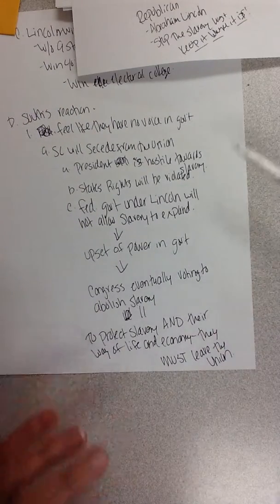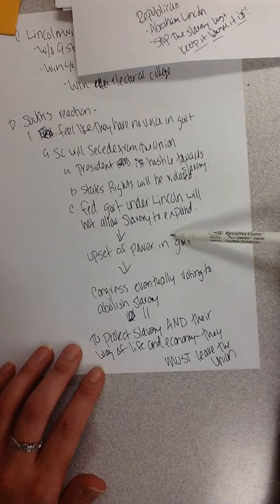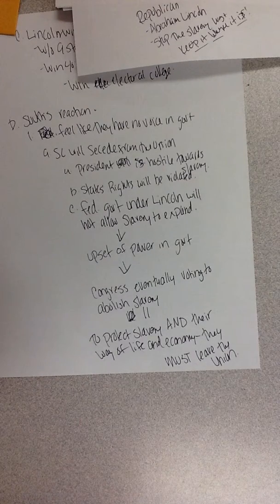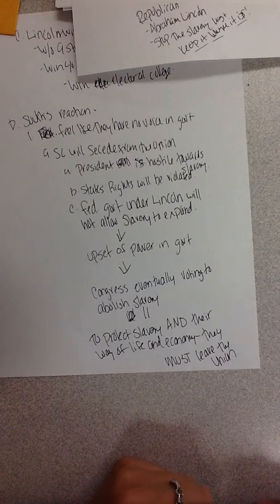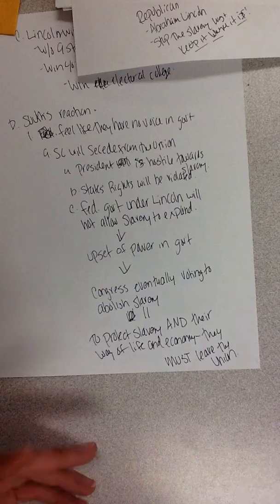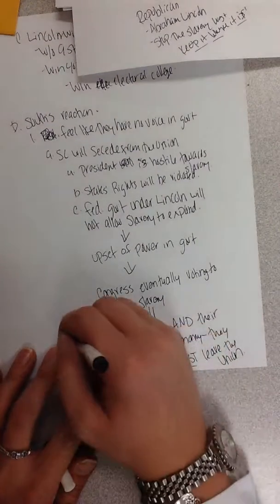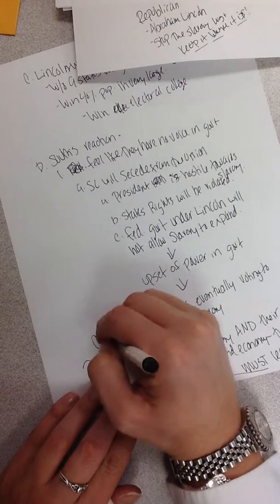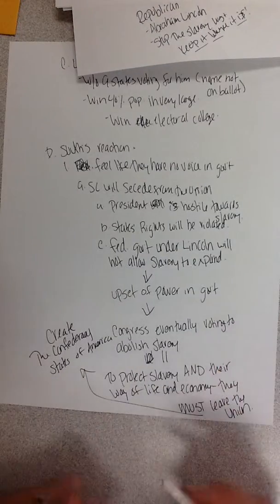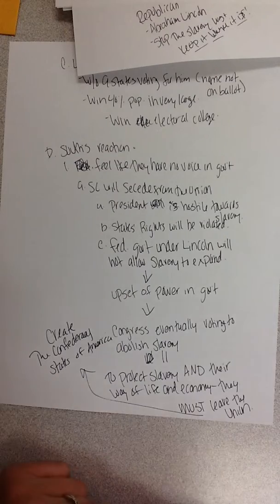It was going to be a snowball effect. As soon as Lincoln became president, he would stop the expansion of slavery, upsetting the balance of power and favoring the North. With Congress dominated by free states, they would pass legislation to abolish slavery, ending the South's economy and social life. To protect slavery, their economy, and their way of life — a state right as they saw it — they must leave the union and create the Confederate States of America. Lincoln won without a single vote from nine Southern states, the South seceded, and the Civil War began shortly after.